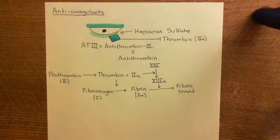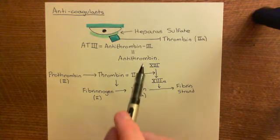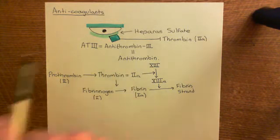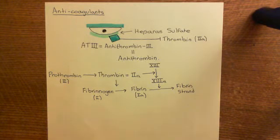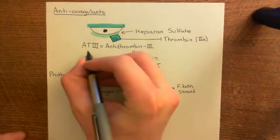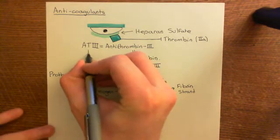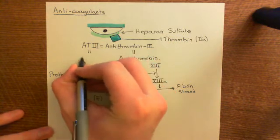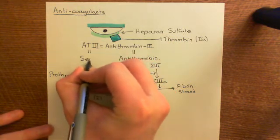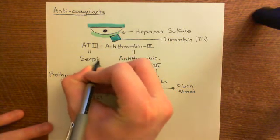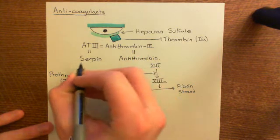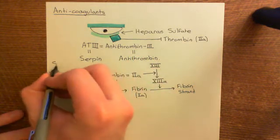We have discussed that the liver is producing this protein known as antithrombin-III. Antithrombin-III is what's known as a serpin — a serine protease inhibitor.